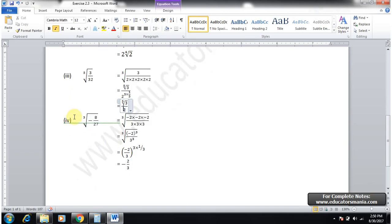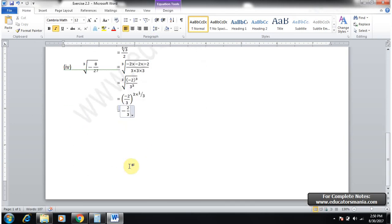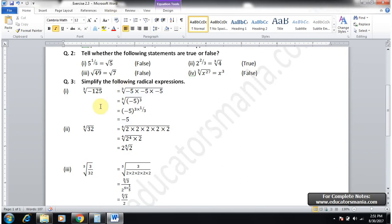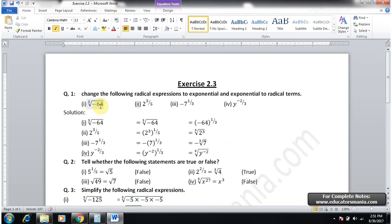Fourth part: minus eight, we will write as minus two into minus two into minus two, and below three into three into three. Minus two to the three and three to the three, whole to power three, and radical sign one over three will change. One over three and three will cancel, minus two by three.